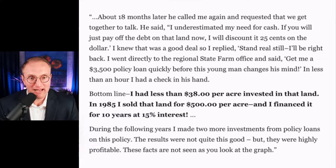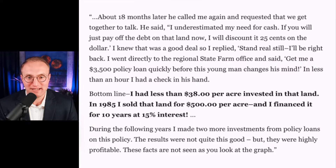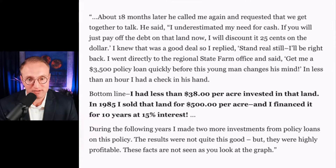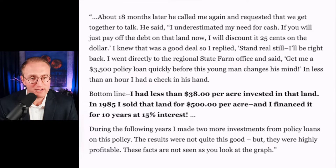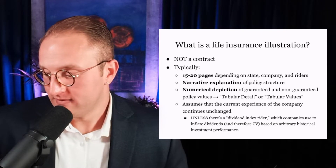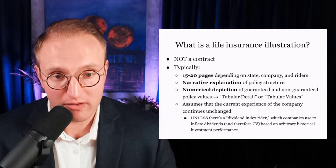'If you will just pay off the debt on that land now, I will discount it 25 cents on the dollar.' I knew that was a good deal, so I replied, 'stand real still, I'll be right back.' I went directly to the regional State Farm office and said, 'get me a $3,500 policy loan quickly before this young man changes his mind.' In less than an hour, I had a check in his hand. Bottom line: I had less than $38 an acre invested in that land. In 1985, I sold it for $500 per acre, and I financed it for 10 years at 15% interest. During the following years, I made two more investments from policy loans on this policy. The results were not quite this good, but they were highly profitable. These facts are not seen as you look at the graph.